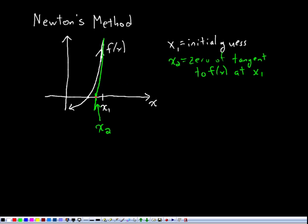And that will be a better guess, usually. If I want an even better guess, I can draw another tangent line and find the zero of that. And that would be my x3. So x3 is the zero of the tangent line to f of x at x2. And my guesses are just going to keep getting better and better.